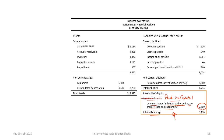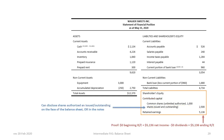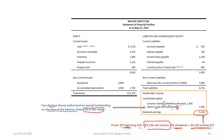Following common shares, we have retained earnings of $5,136. Share disclosures can appear on the face of the balance sheet or in the notes to the financial statements. You should always be able to prove the retained earnings balance: zero beginning retained earnings plus $5,136 in net income less dividends of zero equals an ending balance of $5,136.